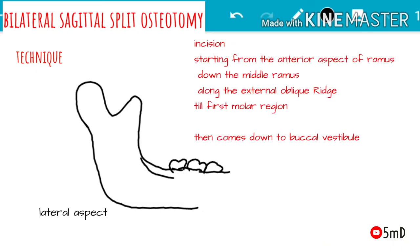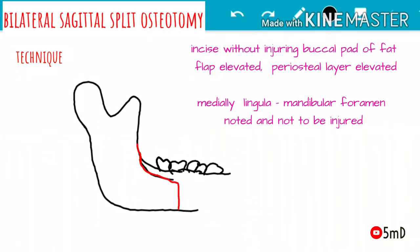Now let us see the technique used in BSSO. Starting with an incision which is placed over the anterior aspect of the ramus, running along the mid portion of the ramus and anteriorly over the external oblique ridge up to the first molar region, after which it curves down into the buccal vestibule. The incision should be given carefully so that it does not injure the buccal pad of fat nearby. The tissues in the buccal region should be retracted well before the incision is made. After the incision, a mucoperiosteal flap is elevated, followed by periosteal elevation on the medial side where we can see the lingula and the mandibular foramen.